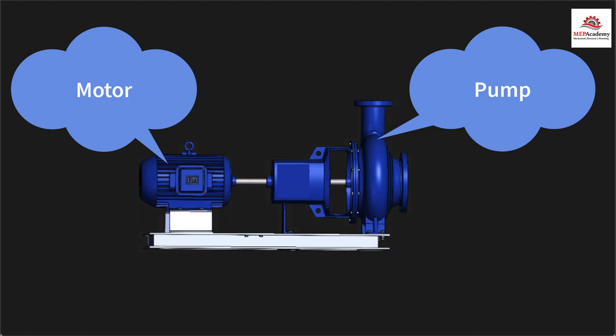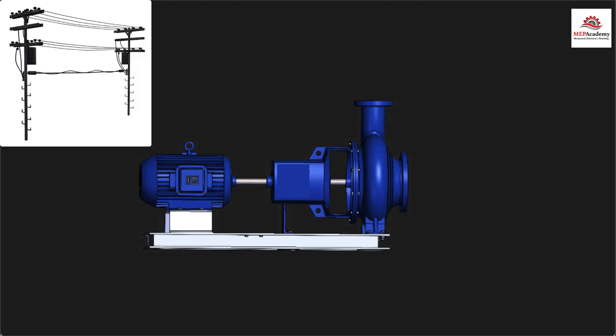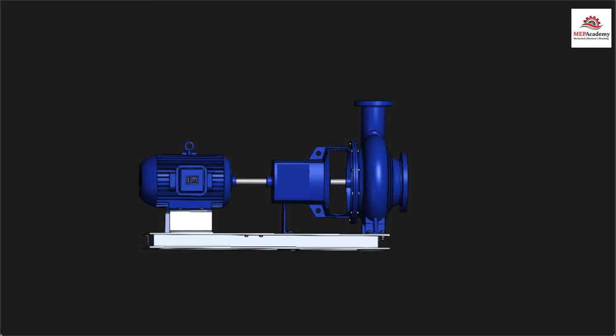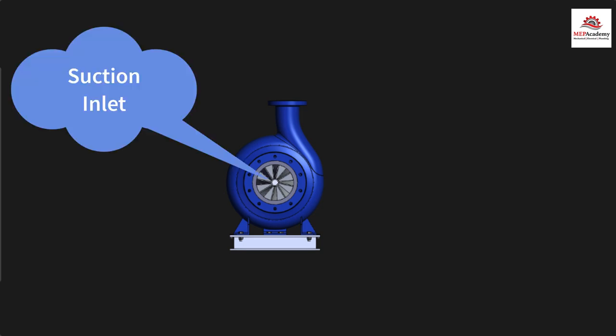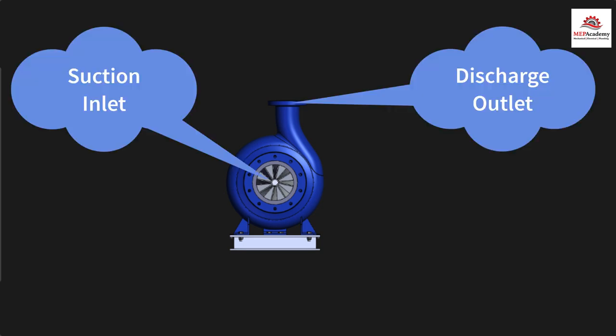The motor takes electrical power and converts it into mechanical energy that moves the fluid through the pipe and equipment. The pump has an inlet where it sucks in the fluid and an outlet where it pushes the fluid out through the system.